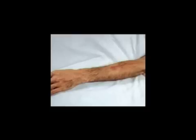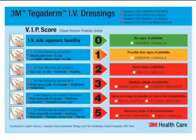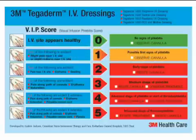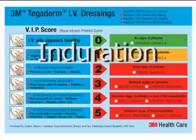Phlebitis develops progressively. It usually starts with pain and redness — the term we use to describe redness is erythema. As the phlebitic episode develops, swelling, and in worst case scenarios, a palpable venous chord and pyrexia are evident. As the swelling becomes worse and is firm to touch, we describe this as induration.